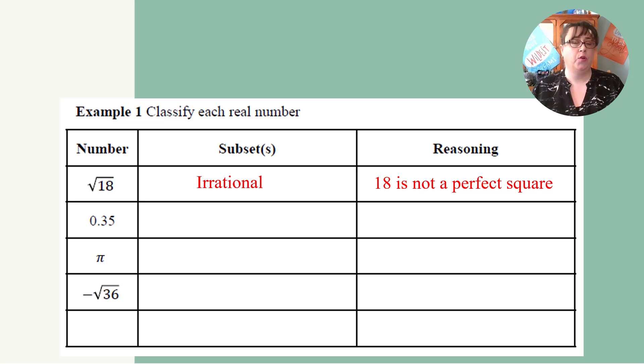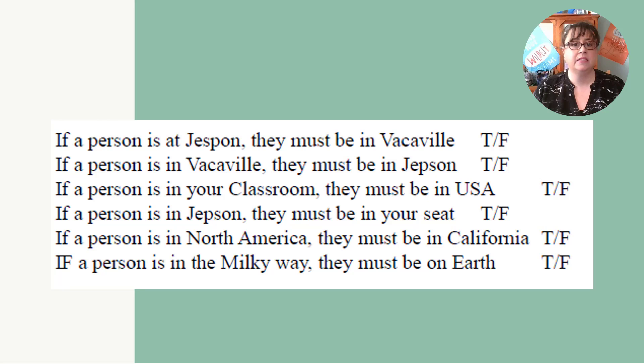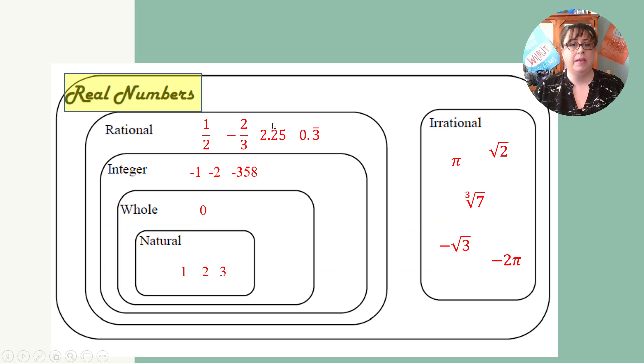So now look at 35 hundredths. Ah, I said it right there. The decimal terminated. Since the decimal terminated, it is a rational number. It is 35 hundredths, which is 7 over 20ths. And that's it. It's not an integer. It doesn't go any smaller than that. So let's go back and look at our slide that actually has those on it. It doesn't go any smaller.